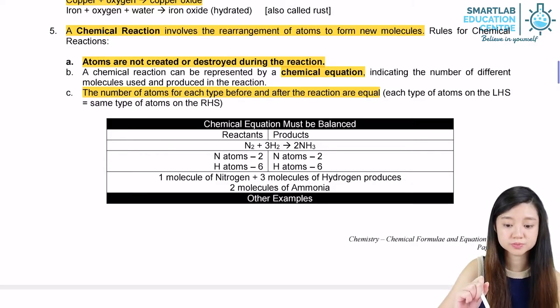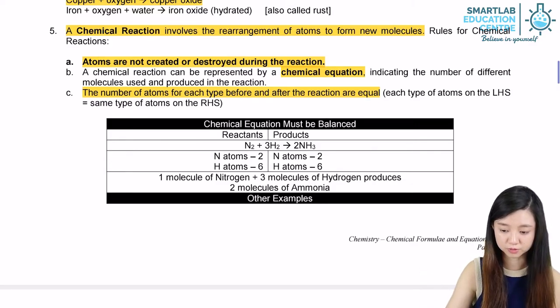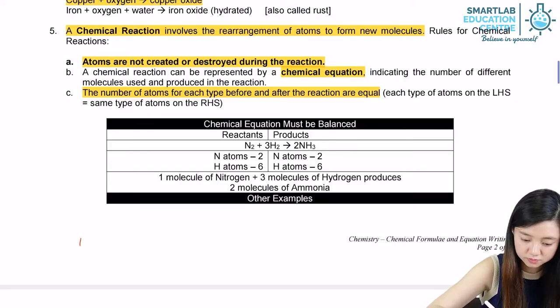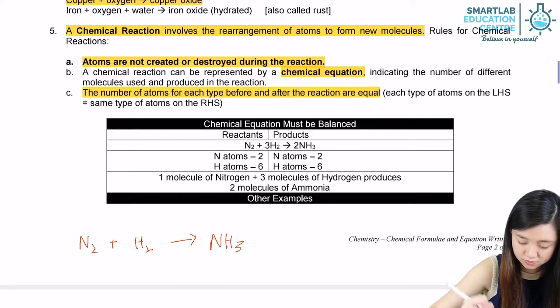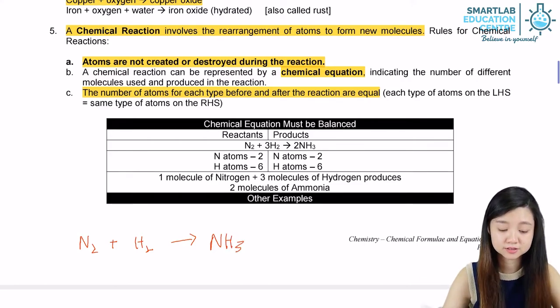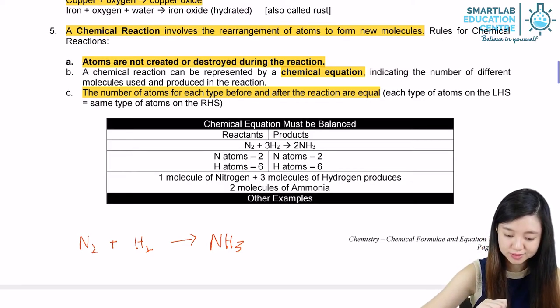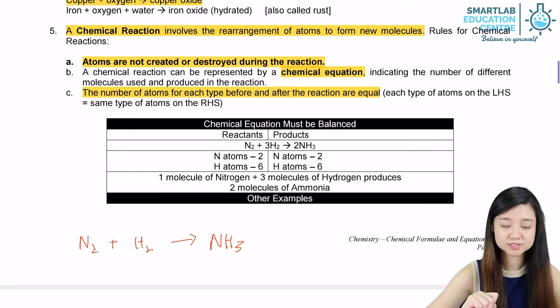We have nitrogen plus hydrogen, it gives you ammonia. So let me write here. From here we can tell that on the left side of the equation, there's two atoms of nitrogen, while the right side of the equation, there's only one atom of nitrogen.